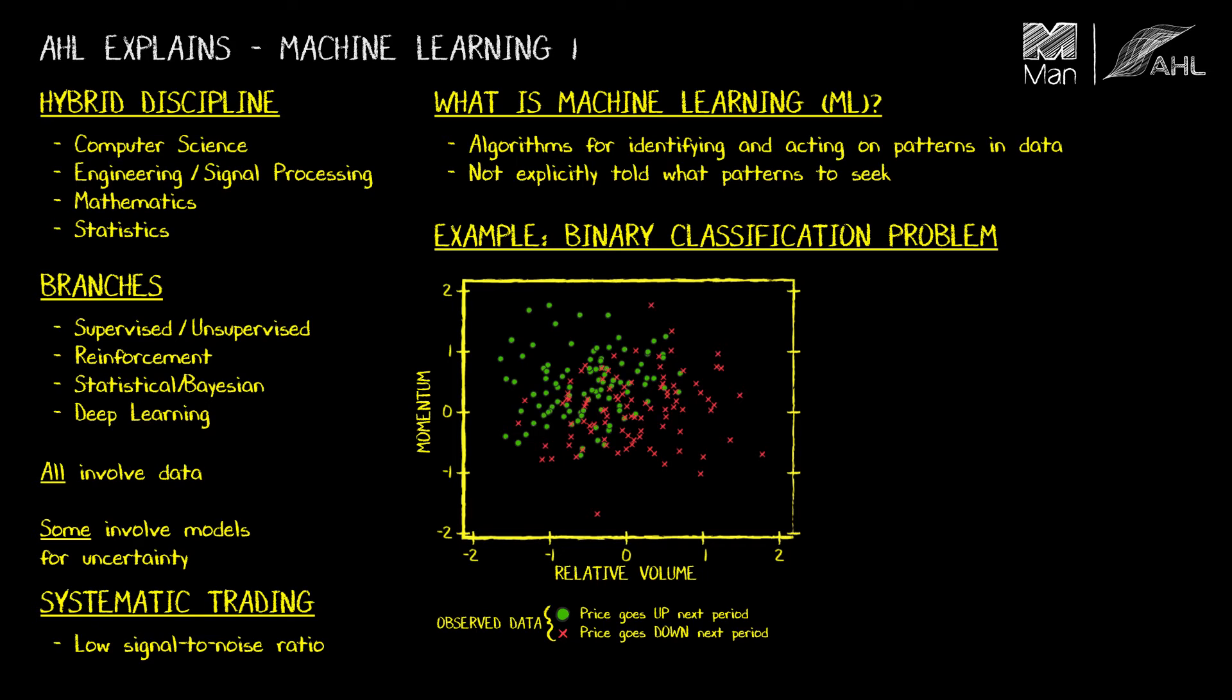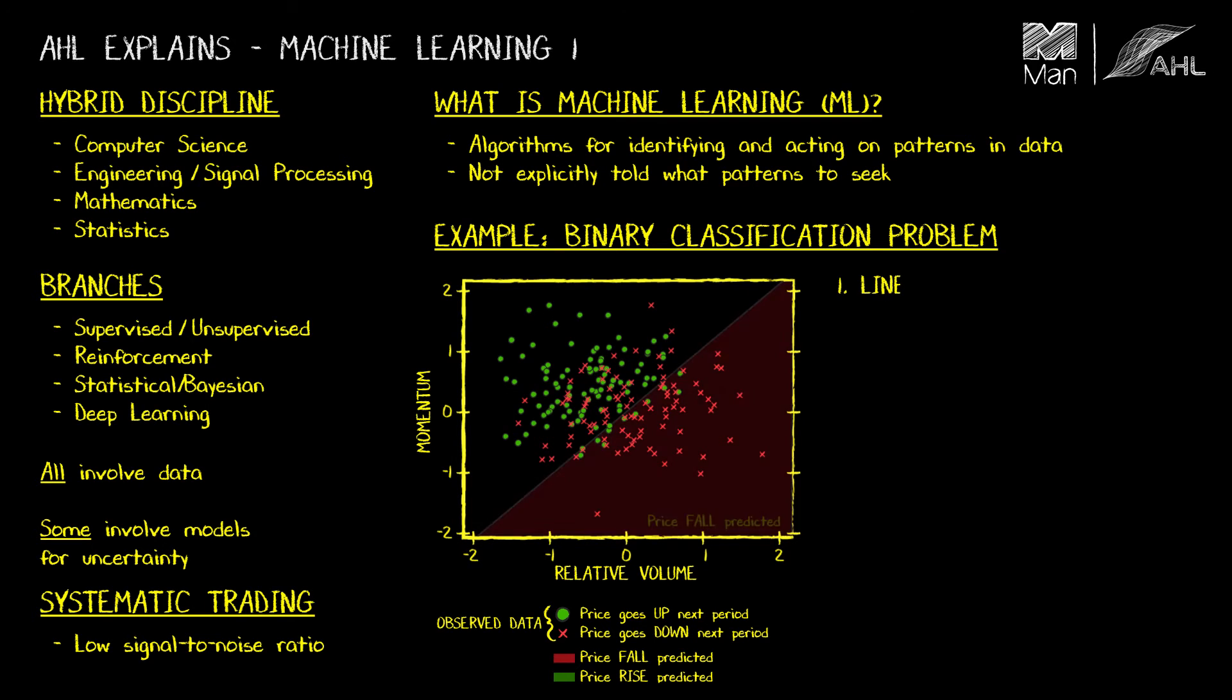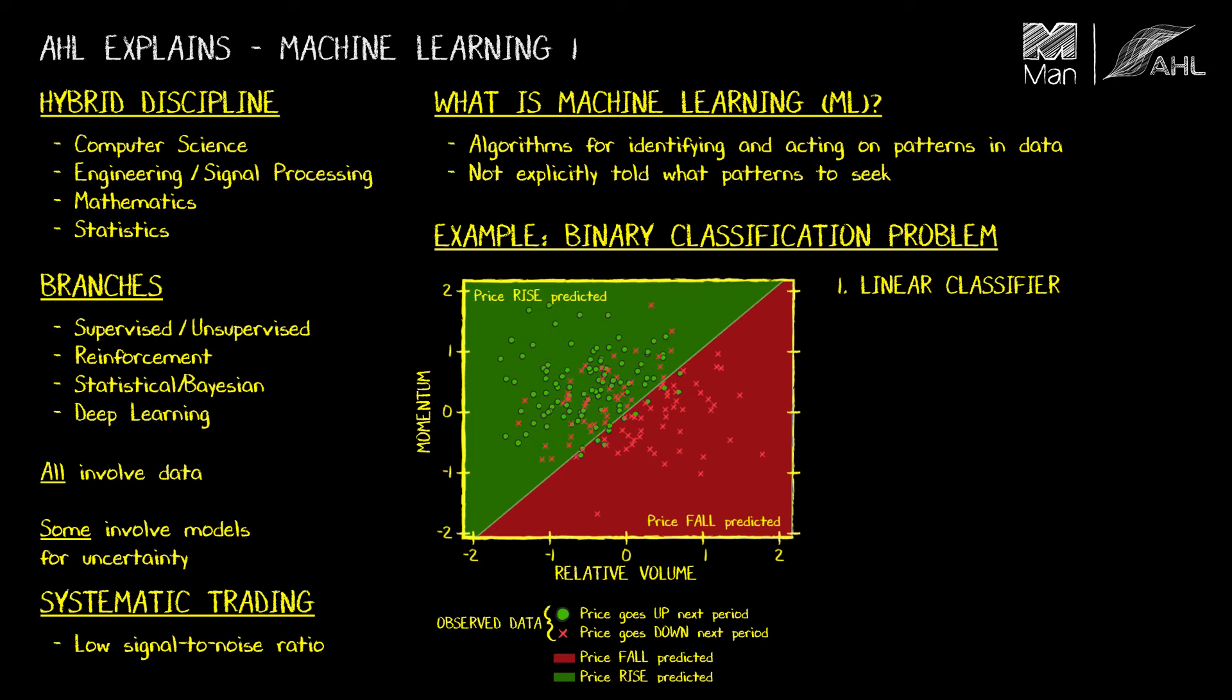Now, what I'm trying to do is use this data to work out whether the market is likely to go up or go down for points in the plane where I don't have any data yet. Basically, it comes down to colouring the background points of this diagram, red or green, and learning that shading from what I've observed in this data. We'll have a look at doing that using a few different methods to illustrate where machine learning is different to more traditional methods.